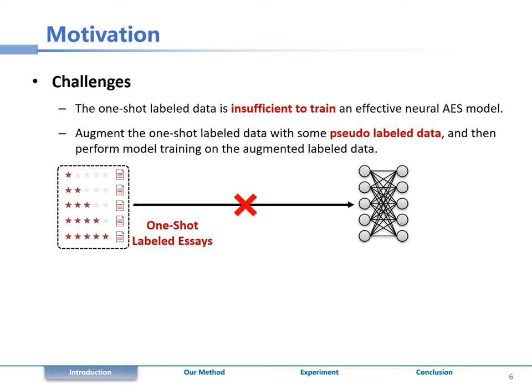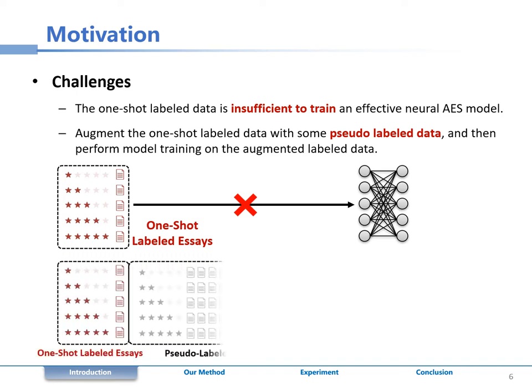To solve this problem, our intuition is whether we can augment the one-shot labeled data with some pseudo-label data, and then perform model training on the augmented labeled data.